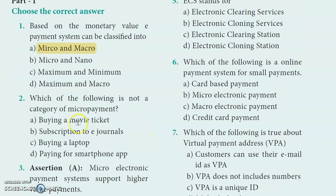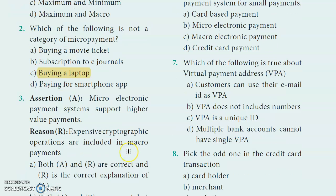Second question: Which of the following is not a category of micropayment? Micropayment is a small amount. Movie ticket, subscription to e-journals, and payment for smartphone applications are micropayments. Buying a laptop is a bigger amount, so that is the answer.